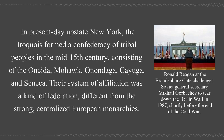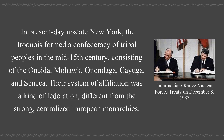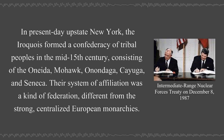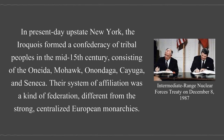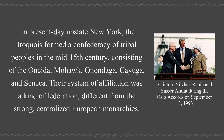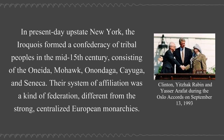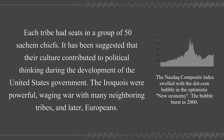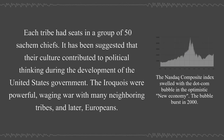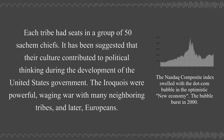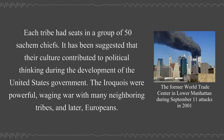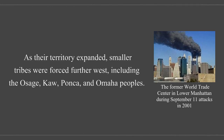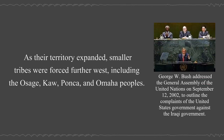In present-day upstate New York, the Iroquois formed a confederacy of tribal peoples in the mid-15th century consisting of the Oneida, Mohawk, Onondaga, Cayuga, and Seneca. Their system of affiliation was a kind of federation, different from the strong centralized European monarchies. Each tribe had seats in a group of 50 sachim chiefs. It has been suggested that their culture contributed to political thinking during the development of the United States government. The Iroquois were powerful, waging war with many neighboring tribes and later Europeans. As their territory expanded, smaller tribes were forced further west, including the Osage, Kaw, Ponca, and Omaha peoples.